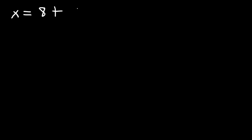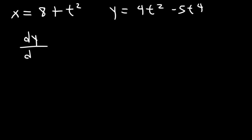In this video, we're going to talk about how to find the derivative of a parametric function. So let's say we have this particular parametric function, where x is 8 plus t squared, and then y is 4t squared minus 5t to the 4. Our goal is to find dy/dx.